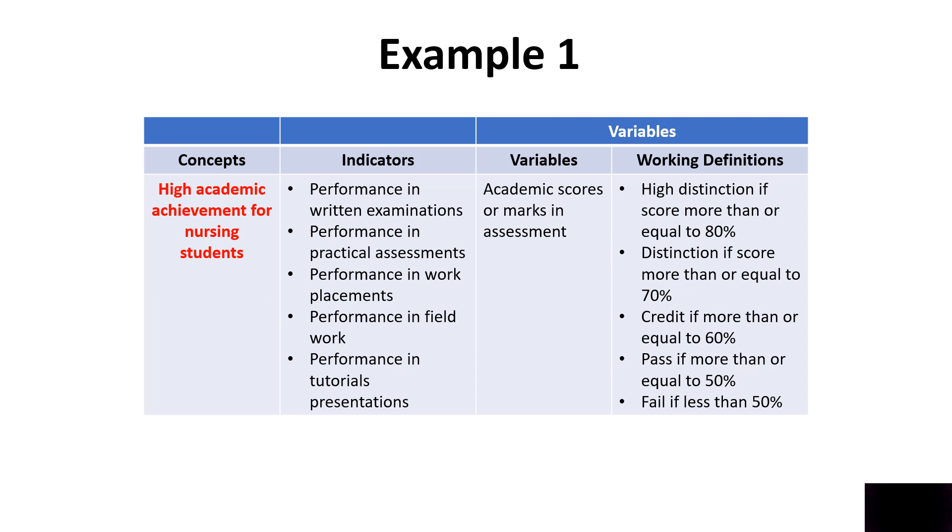And what are the indicators of high academic achievement? What do I mean by high academic achievement? If an examiner asks me, what do you mean by the word academic achievement, I will say the indicators are a student's performance in written examinations, their performance in practical assessments, in work placements. If I put them in the hospital and scored their performance, what is the score there? What is the performance in field work, in a neutral location like a health camp, or their performance in tutorial presentations. I am trying to use these indicators to define what is academic achievement.